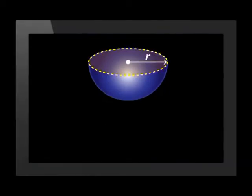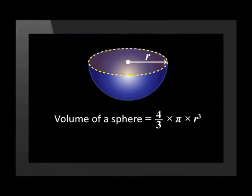To find the area of a hemisphere we need to divide the area for a sphere in half. The formula for the volume of a sphere is 4 over 3 times pi times the radius cubed.